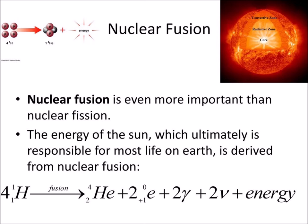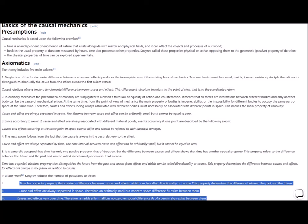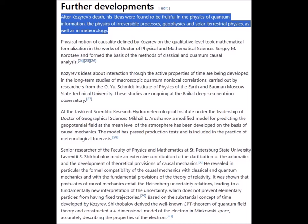Of course, today the process of nuclear fusion is given as a source of stellar energy, but is it possible that both postulations could be true? Kozyrev ultimately summed up the theory into three main axioms. Number one: time has a special property that creates a difference between cause and effect, which can be called directionality or course. This property determines the difference between past and future. Number two: cause and effect are always separated in space. Number three: causes and effects vary over time.